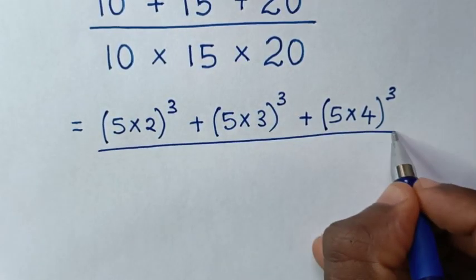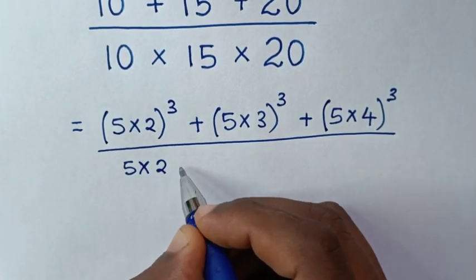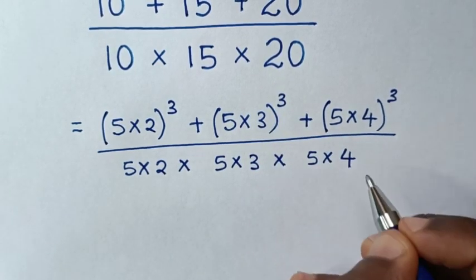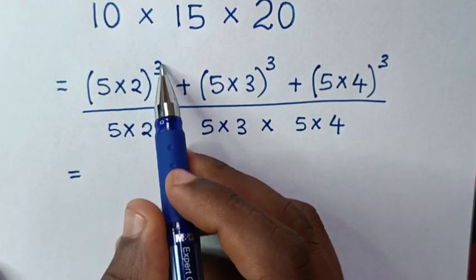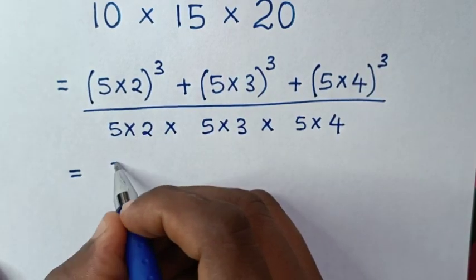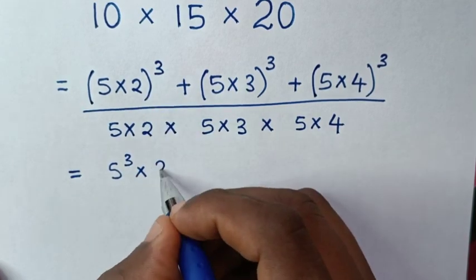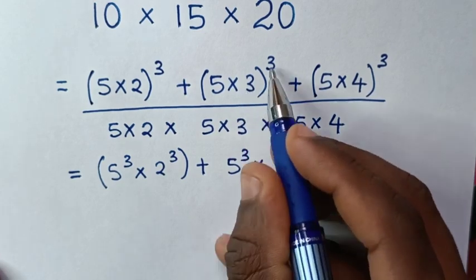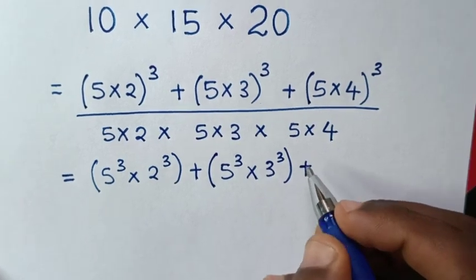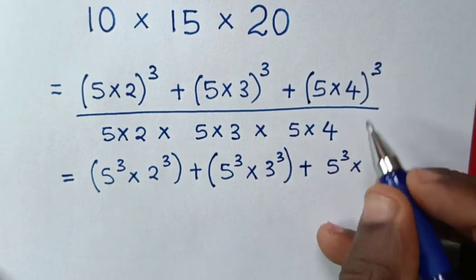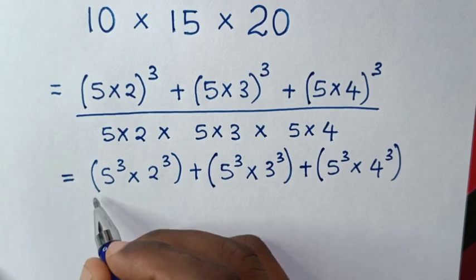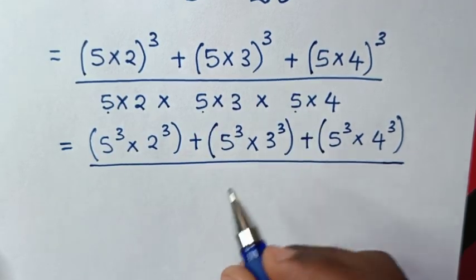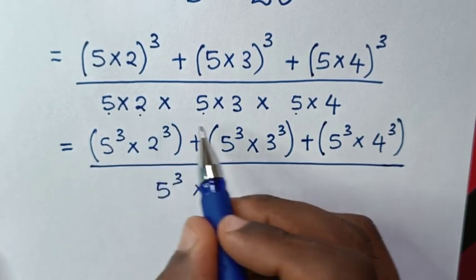Then over in the denominator: 10 is the same as 5 times 2, then times 15 is the same as 5 times 3, then times 20 is the same as 5 times 4. In the next step, we take the power of 3 inside the bracket — same as here, same as here. So it will be 5 power of 3 times 2 power of 3, plus 5 power of 3 times 3 power of 3, plus 5 power of 3 times 4 power of 3, over 5 times 5 times 5 times 2 times 3 times 4.